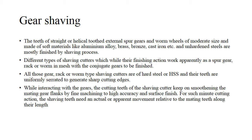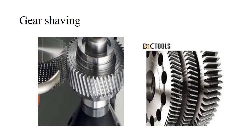Gear rack or worm type shaving cutters are made up of HSS, and their teeth are uniformly serrated to generate sharp cutting edges. When interacting with the gears, the cutting teeth of the shaving cutter keep smoothening the mating gear flanks by fine machining to high accuracy and surface finish. For such minute cutting action, shaving teeth need an actual or apparent motion relative to the mating teeth along their length. Just imagine a roughly machined gear — for the further finishing process you have to make sure the shaving cutter is very sharp-edged, which removes all the extra dimensions present to ensure the final gear is accurate. You can see the gear work piece and the shaving machine here, which is very highly sharp and made up of HSS steel. Here you can also see different types of gear shaving cutters.